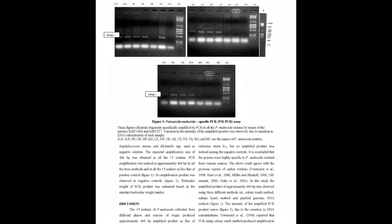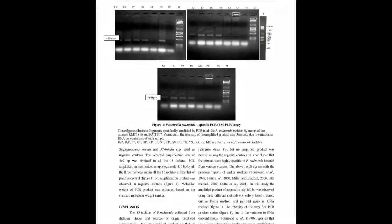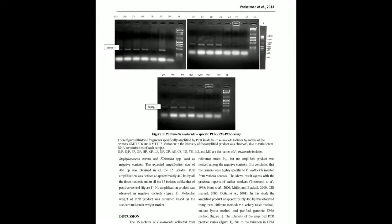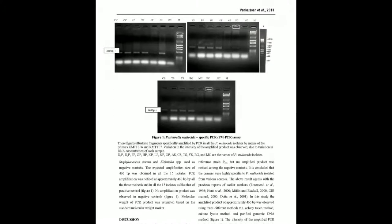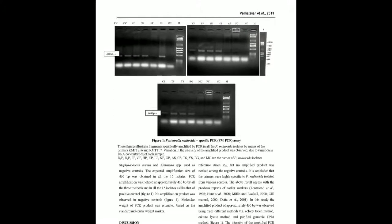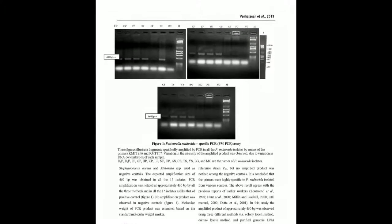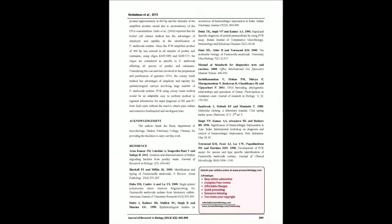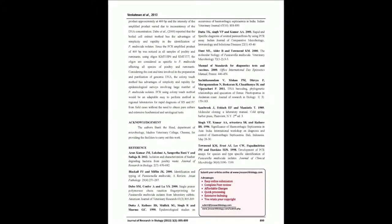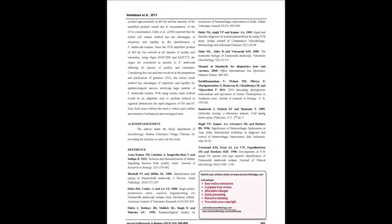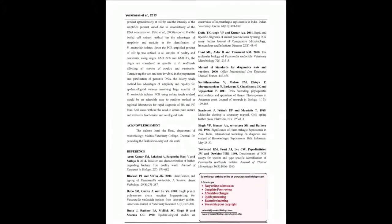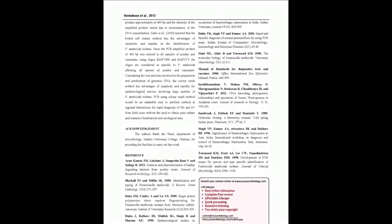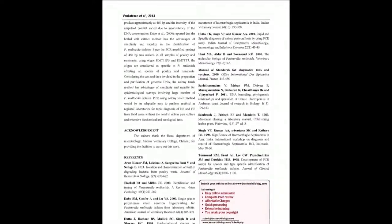These oligos amplified the genomic DNA from P. multocida isolates only. All three methods produced a PCR amplified product at 460 bp, and the colony touch method was found to be the best method.